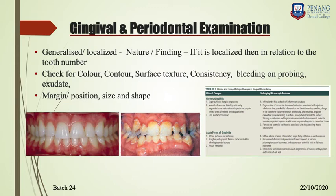There are also subclinical findings — such as increased gingival crevicular fluid — which are the first subclinical sign of gingival disease. For gingivitis, the first clinical sign is bleeding on probing, and the first subclinical finding is increased gingival crevicular fluid.